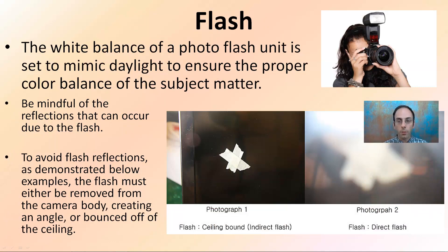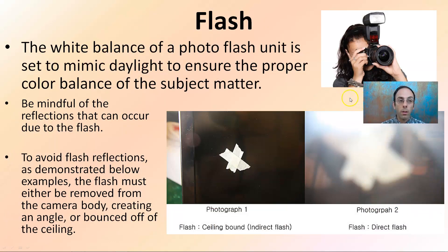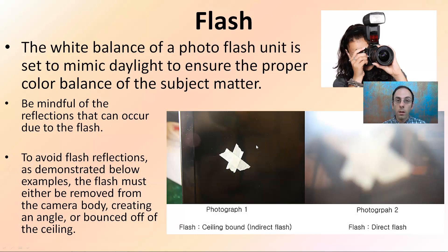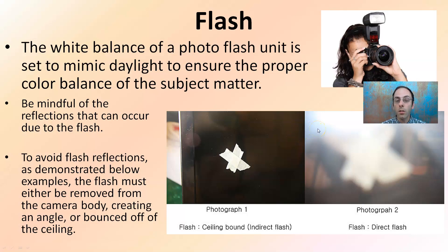Lastly, the flash. The camera flash relates to the white balance of the photo. The flash unit is set to mimic daylight to ensure proper color balance of the subject matter. Be mindful of reflections, particularly from glass or shiny objects, that can occur due to the flash. Here, the flash is indirect — pointed upward toward the ceiling — whereas direct flash on the image can really distort it. An indirect or off-camera flash adds enough light to see detail without causing reflections or blurriness. These are important key items to keep in mind when studying photography skills and capturing quality images that truly depict what is seen at the crime scene.